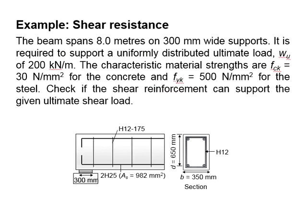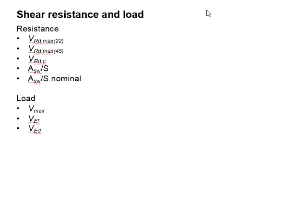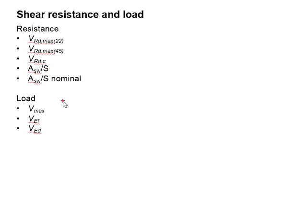If you observe one of the examples discussed in one of our previous videos regarding the design of shear reinforcement of a concrete beam, you will see three types of shear loads: Vmax, Vef, and Ved. To summarize, we have VRD max 22 degree, VRD max 45 degree, VRDC, ASW per S representing the amount of shear reinforcement, and ASW per S nominal representing the minimum shear reinforcement required. In terms of the load, we have Vmax, Vef, and Ved.